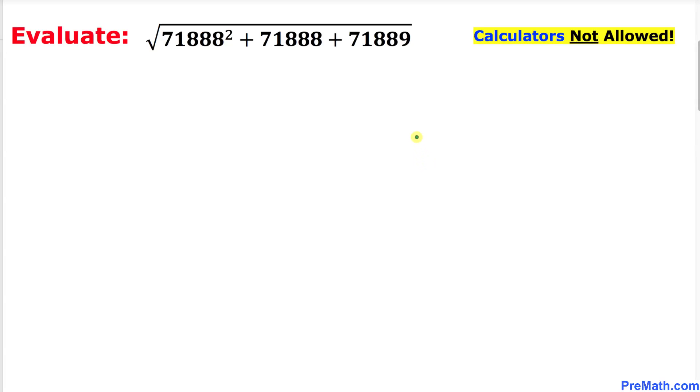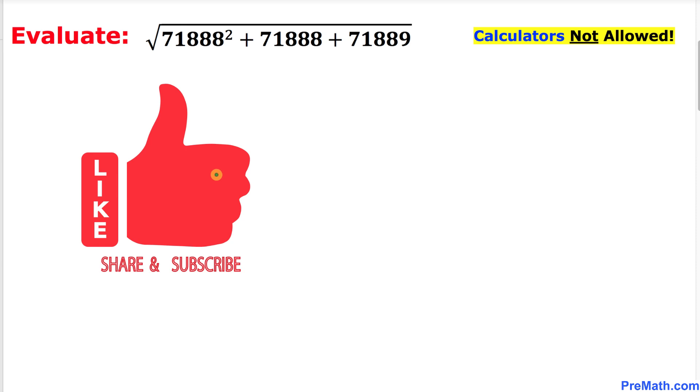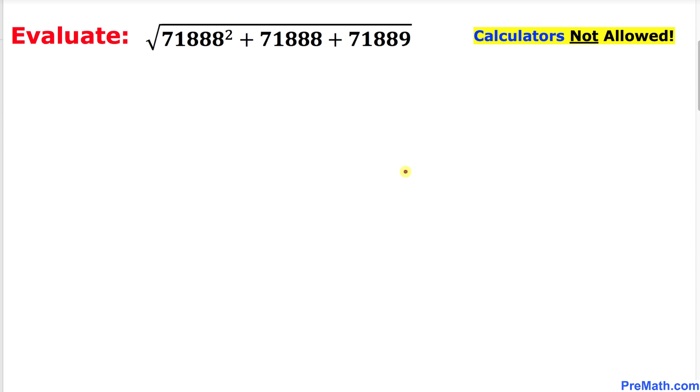Welcome to PreMath. In this video lesson, we are going to find the value of this given radical problem: the square root of 71888 squared plus 71888 plus 71889. We are not supposed to be using calculators of any kind. Please don't forget to give a thumbs up and subscribe. So let's go ahead and get started with the solution.